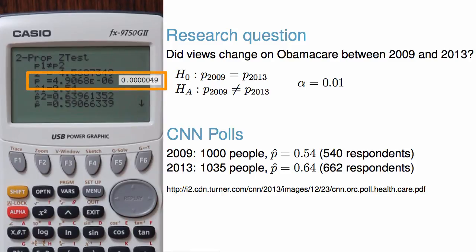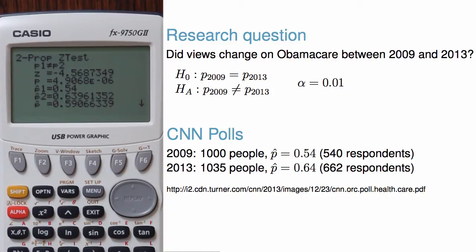Since the p-value is smaller than alpha equals 0.01, we reject the null hypothesis. That is, we have found strong evidence that the proportion of US adults who believe Obamacare will increase their healthcare costs was higher in 2013 than in 2009. Notice that even though the alternative hypothesis was two-sided, if we reject the null hypothesis, we can conclude the direction based on the data.